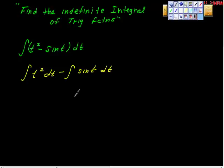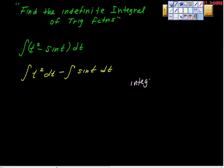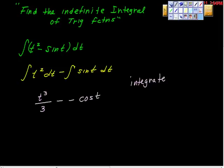Now we can just integrate. So start to integrate — same thing: rewrite, integrate. So we rewrote, and now we're going to start to integrate. This is going to be t cubed over 3. And then this is minus, but when we take the anti-derivative of sine t, we get negative cosine t. So this negative and this negative go to positive, plus C.